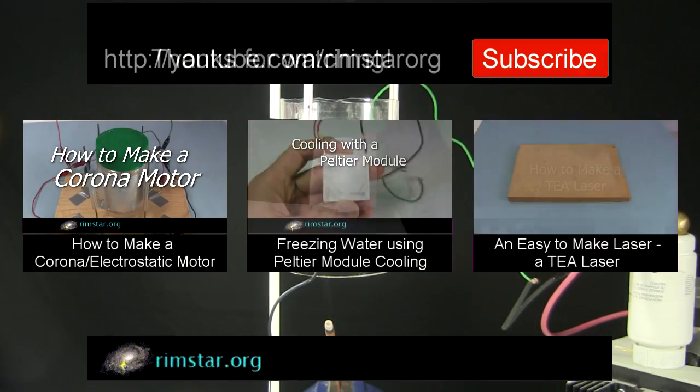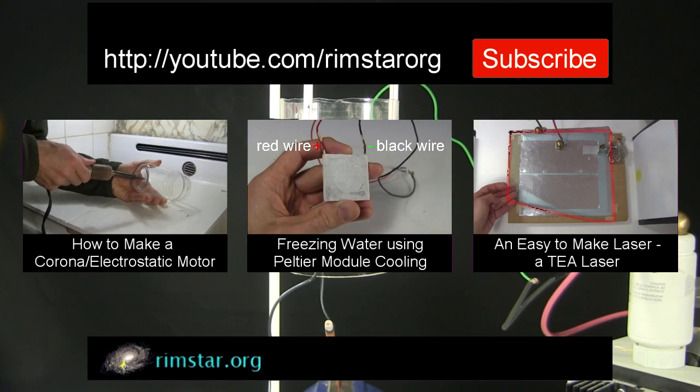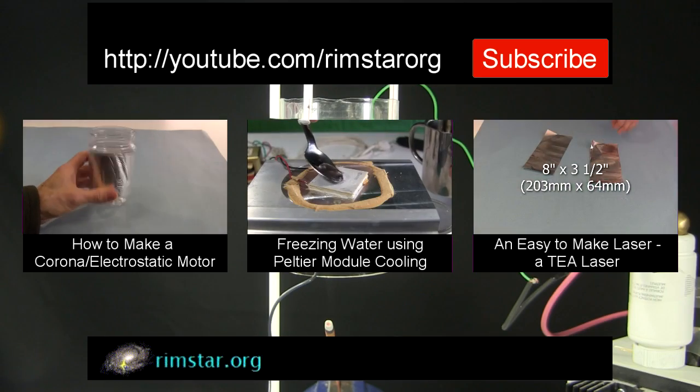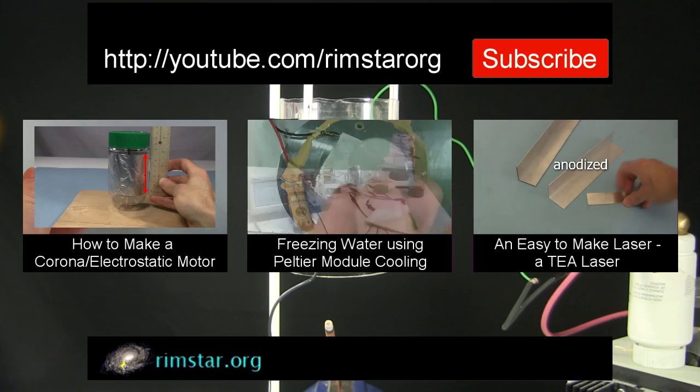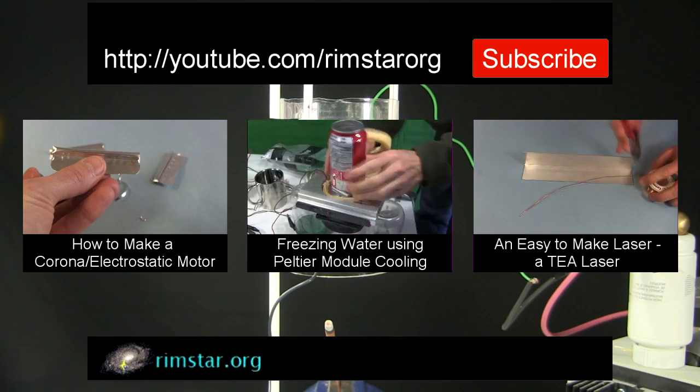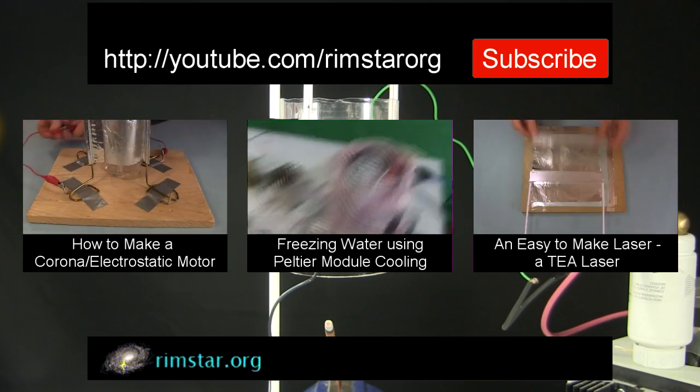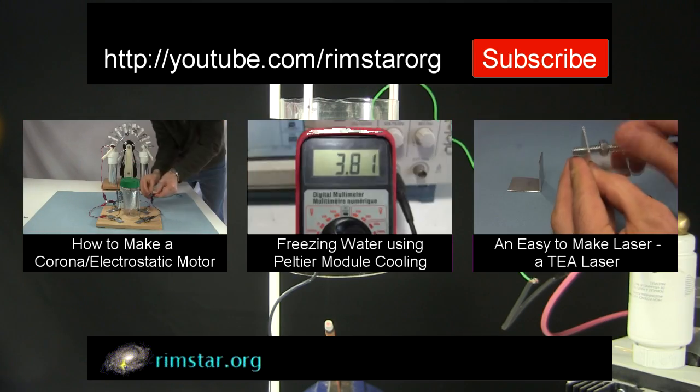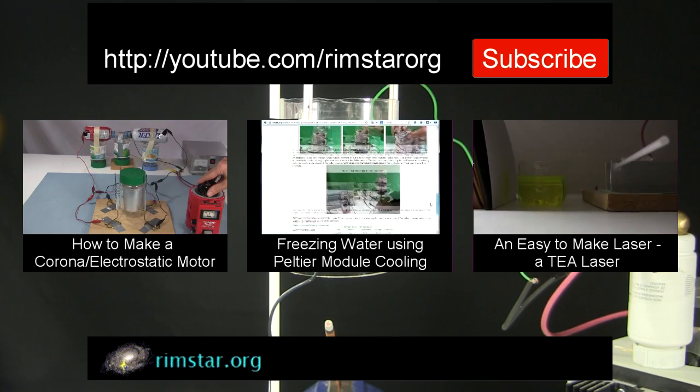Well, thanks for watching. See my YouTube channel, Rimstar Org, for more fun videos like this. That includes one on how to make a neat corona motor, sometimes called an atmospheric or electrostatic motor. Another about freezing water using a Peltier module. And one on an easy to make laser called a T-Laser. And don't forget to subscribe if you like these videos, or give a thumbs up, or leave a question or comment below. See you in a bit!